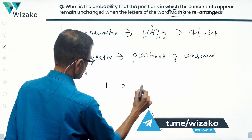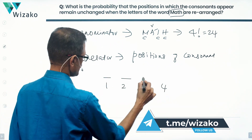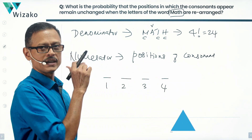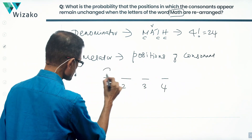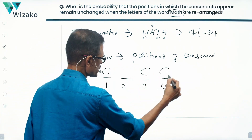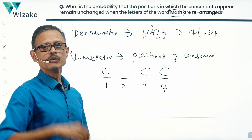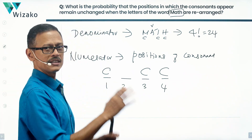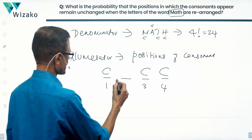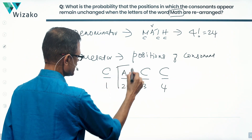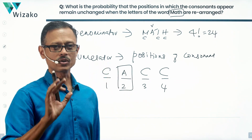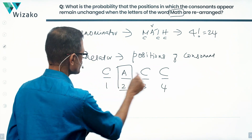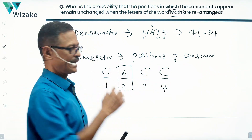It's a four-letter word with positions one, two, three, four. The positions in which the consonants appear must remain unchanged. So the first, third, and fourth positions are consonants. There is only one vowel, and that is going to be in the second place — and that is A. So the second letter is A, and we cannot change that.